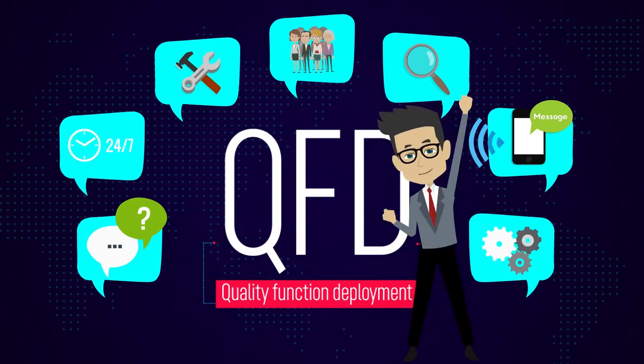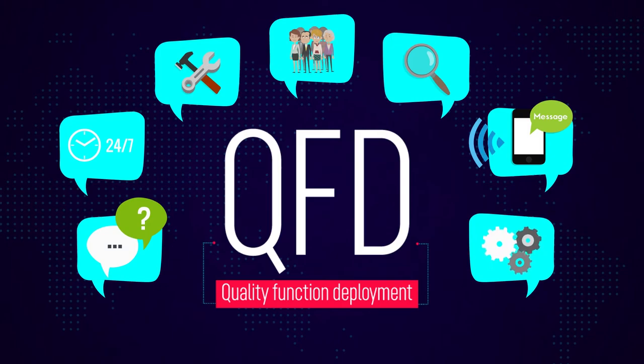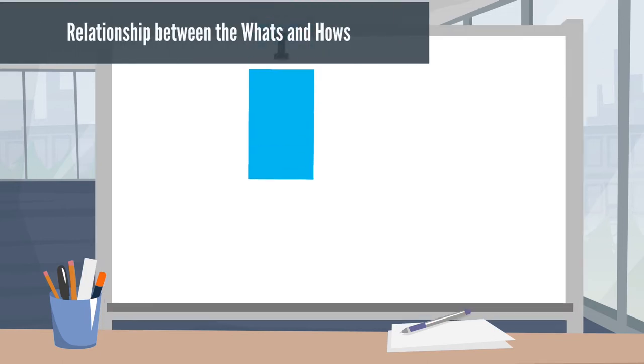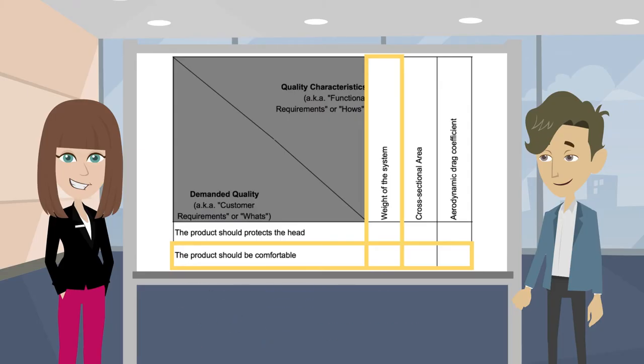The Quality Function Deployment. Once the first four stages have been completed, it's time to determine the relationship between the what's and the how's. Let's consider this particular example. According to the methodology, in order to have correct sentences, they have to start with the word 'the system.'